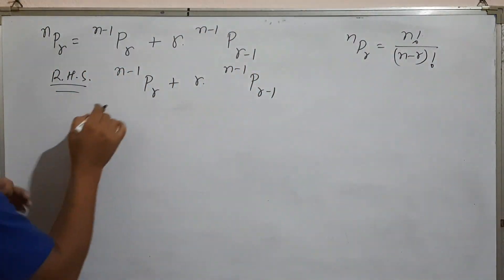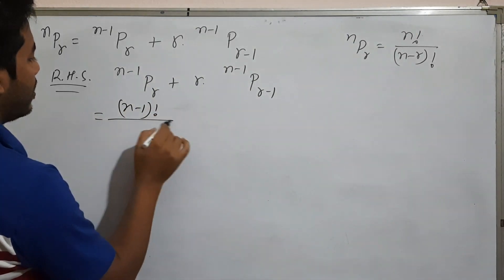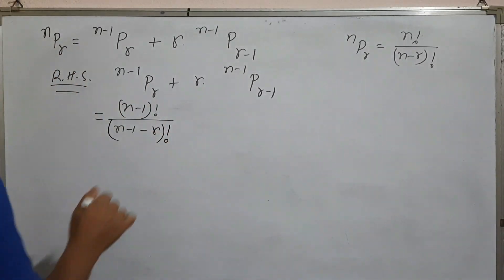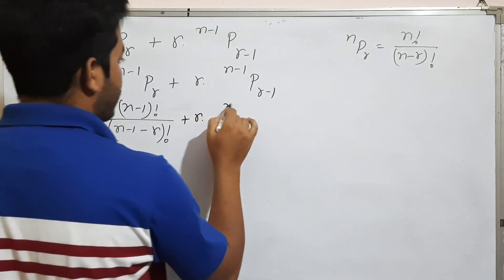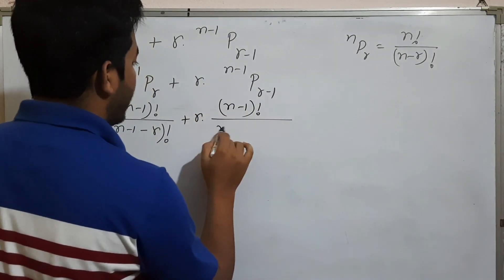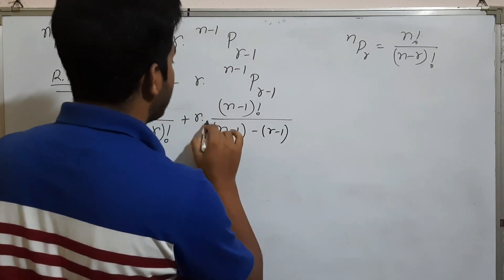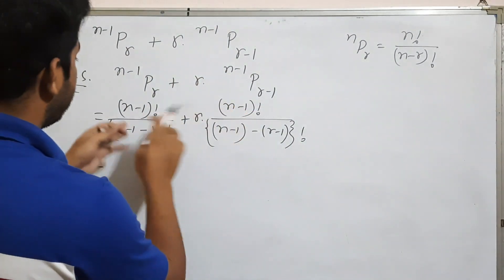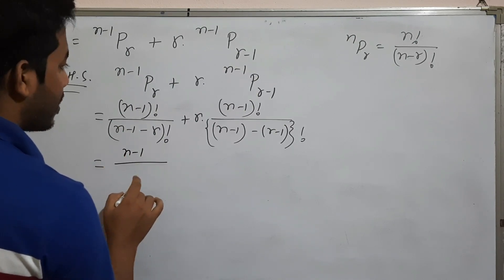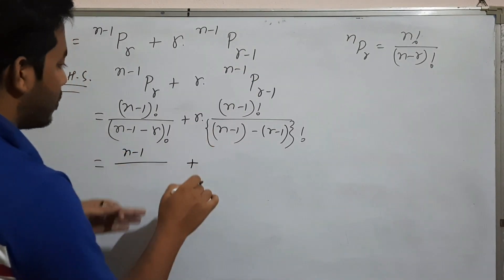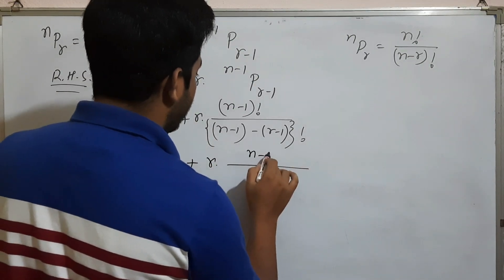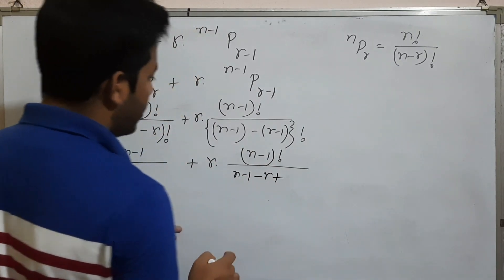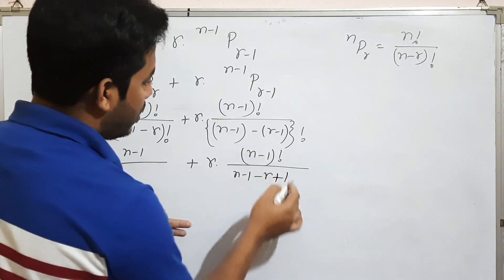Here we will apply n minus 1 factorial divided by n minus 1 minus r factorial. If we have r multiplied by n minus 1 factorial, n minus 1, r minus 1, we can achieve n minus 1 factorial. That gives us n minus 1 C r.